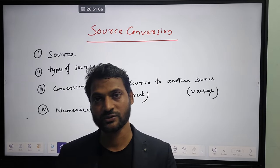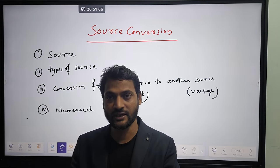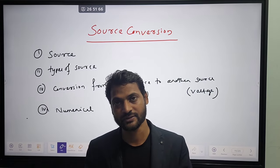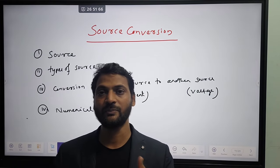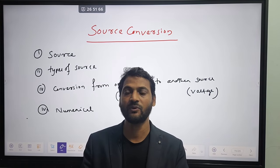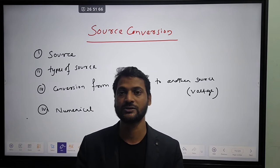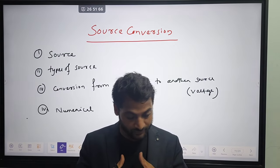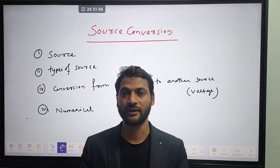What is voltage source? The voltage source is the source which can energize the electrical circuit by providing the potential difference or voltage. And current source is which can energize the circuit by providing current. Again, we can classify voltage source in two categories like ideal voltage source and practical voltage source. Similarly, we can classify current source in two categories like ideal current source and practical current source.